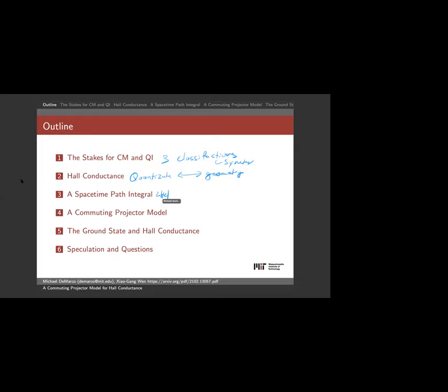From there we'll get into the model itself, which is quite geometric, so we'll start with a space-time path integral version in two plus one dimensions. We'll see that this model has three very special properties relating to its symmetries and redundancies, and those properties are what will allow us to create a commuting projector model. Finally we'll come back to the ground state, geometry, and Hall conductance.